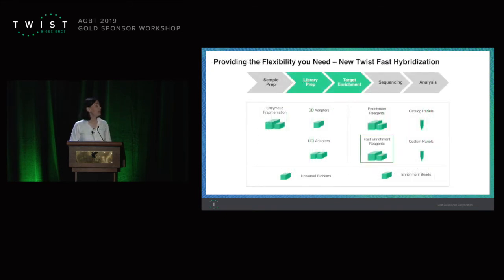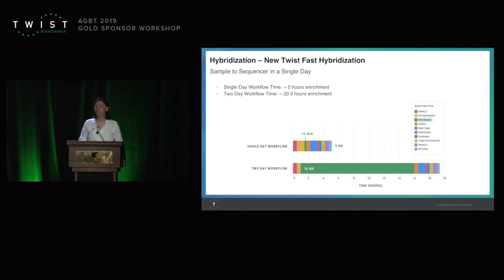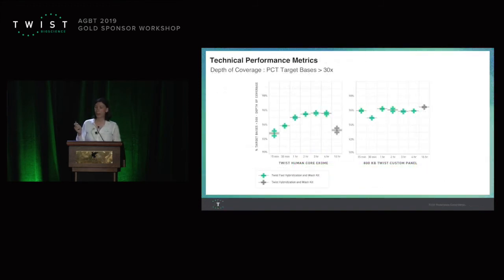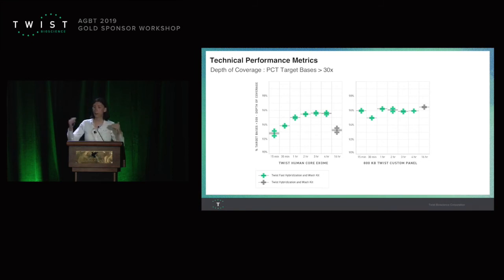The next thing we're adding is fast hybridization. In the past we used to have a 16-hour hybridization to get maximum efficiency. Now we have changed the hybridization buffer and you can achieve the same results in 15 minutes, so that you can go from a sample to the sequencer in the same day. On the left we have the exome data — in gray you can see that 16-hour hybridization is as good as 15-minute hybridization with the new buffer. If you wait 30 minutes or one hour it gets even better, but you get the same performance at 15 minutes as you used to get at 16 hours. On the left is a big panel and on the right is a very small panel — it works both ways, with very high on-target and high percentage of bases covered.